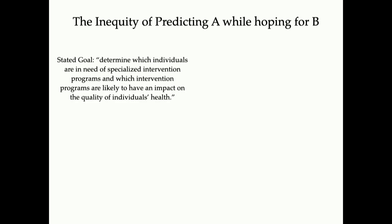This also shows up in AI systems. Here's an example in a healthcare setting where they were trying to determine individuals in need of specialized intervention programs and which intervention programs are likely to have an impact on the quality of individuals' health. They were an insurance company, so they used predicted healthcare costs for this. Maybe that would be reasonable, you might think, but there's certainly a gap set up where we have costs equals some underlying property of health plus a specification gap.